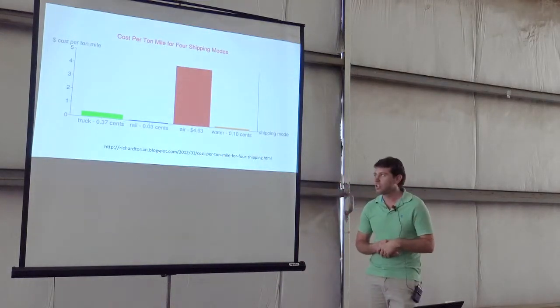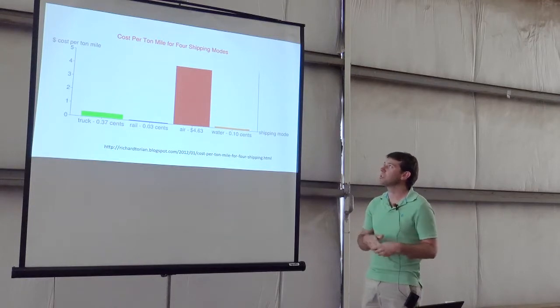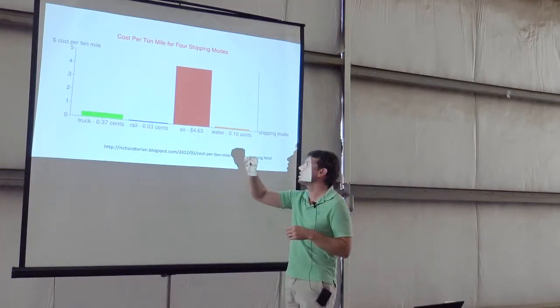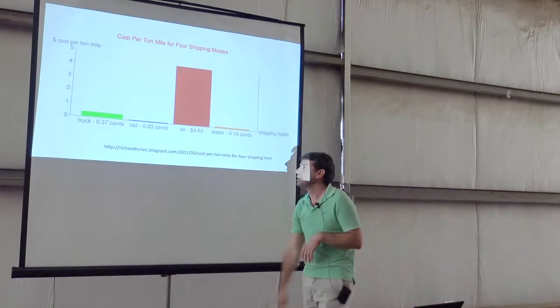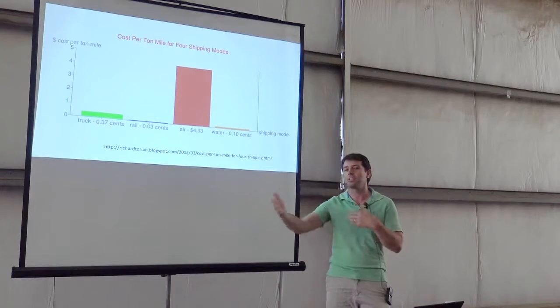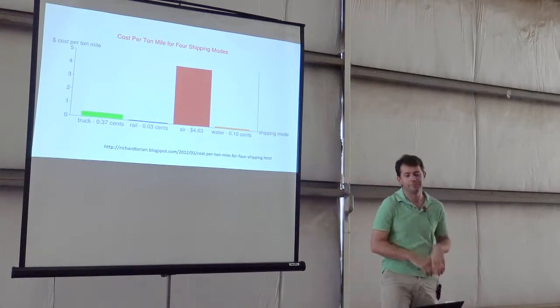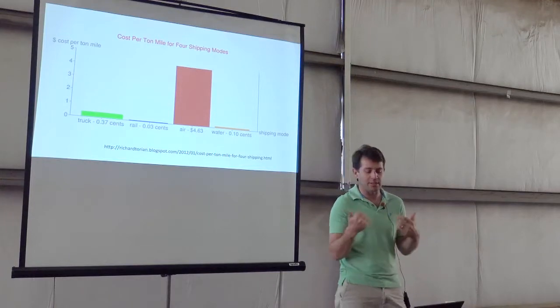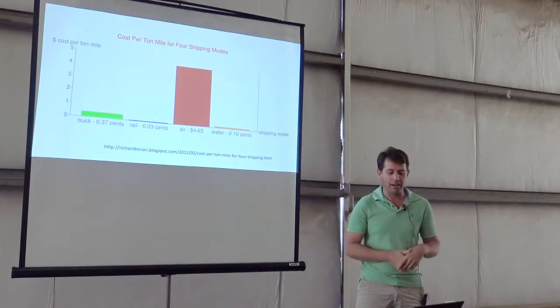This is a chart of cost per ton-mile, how much it costs you to move that package per mile. Obviously, truck, rail and moving on the water is pretty cheap, and air is pretty expensive. That's not surprising - you're paying a premium for the time to get your package delivered. That's obviously depending on what's important to you: is time important or is money important?